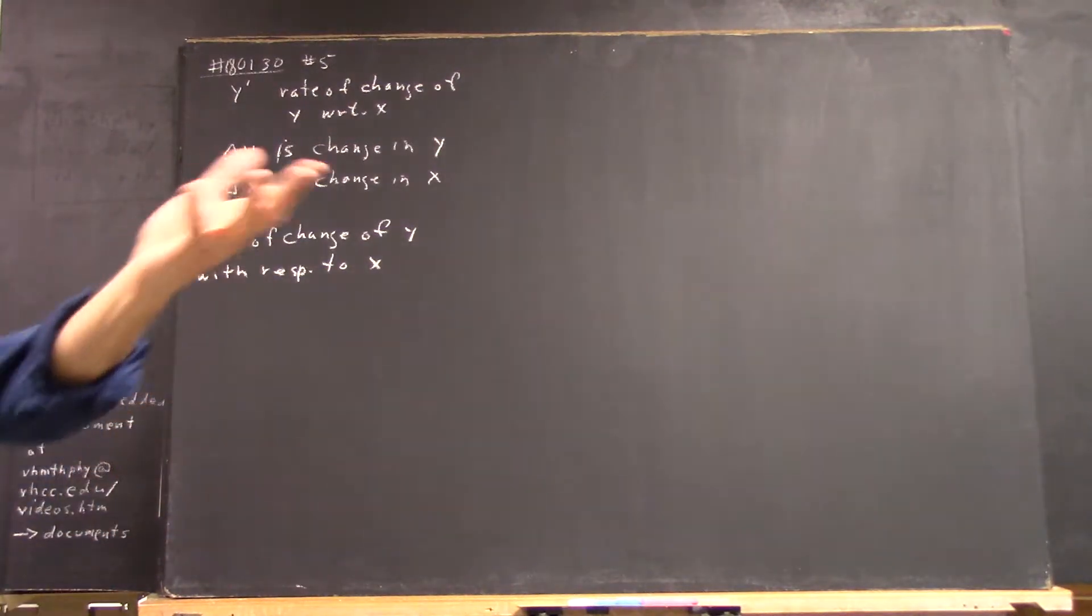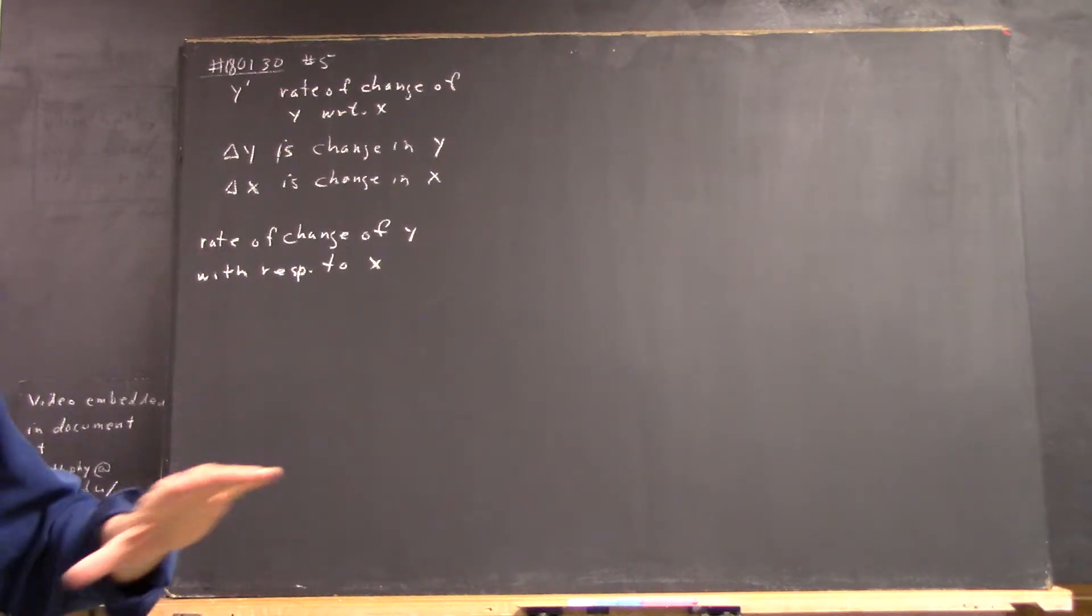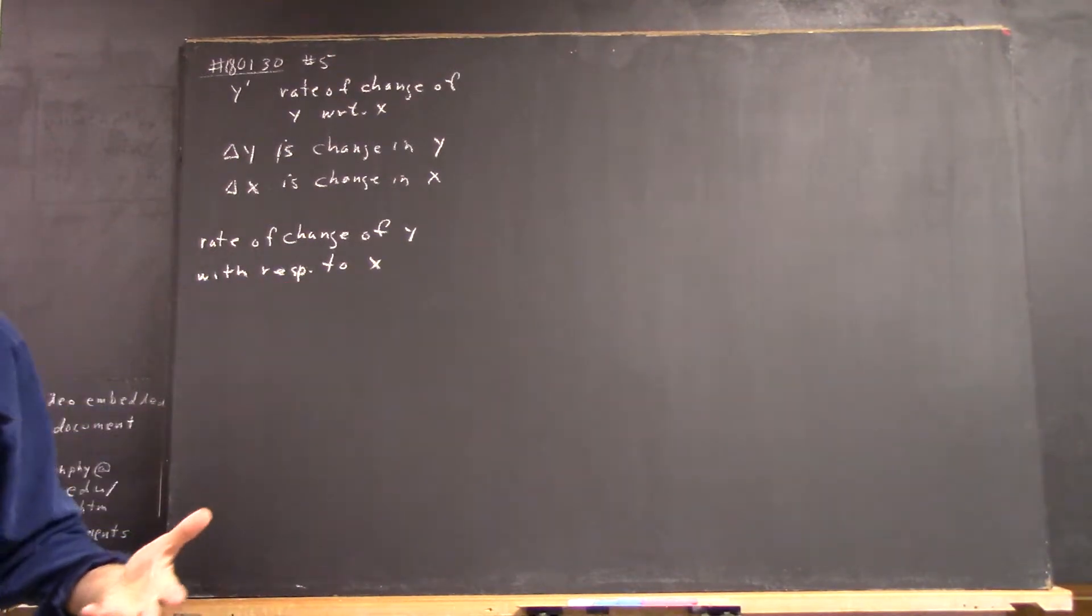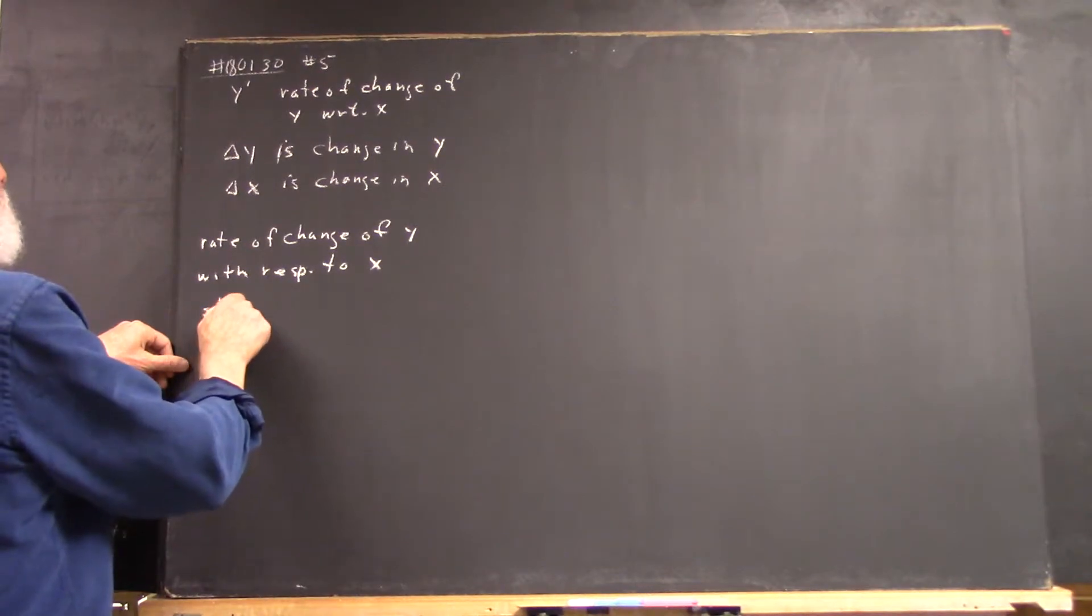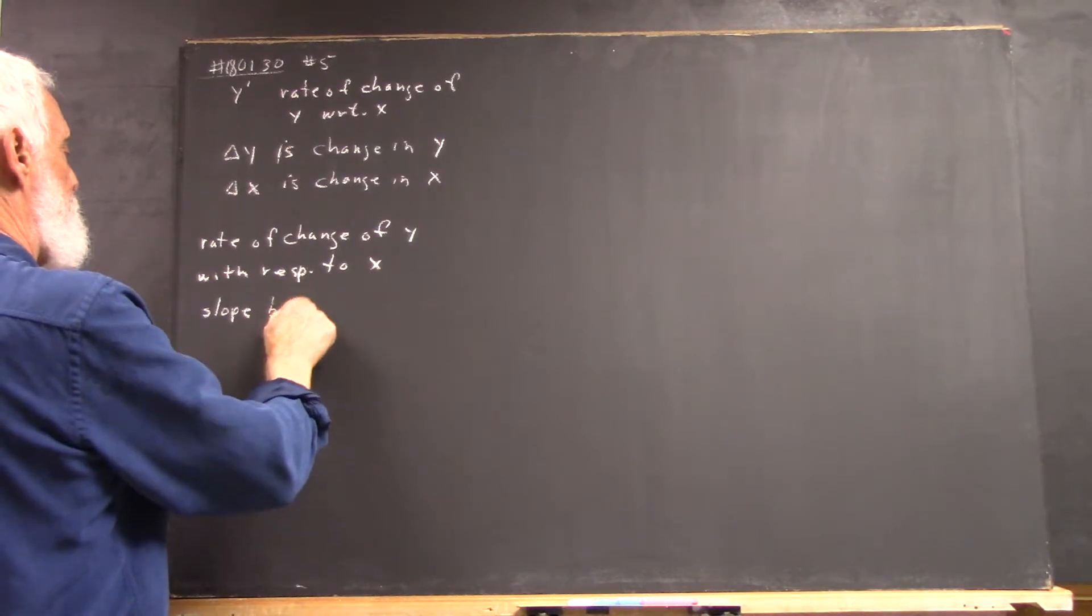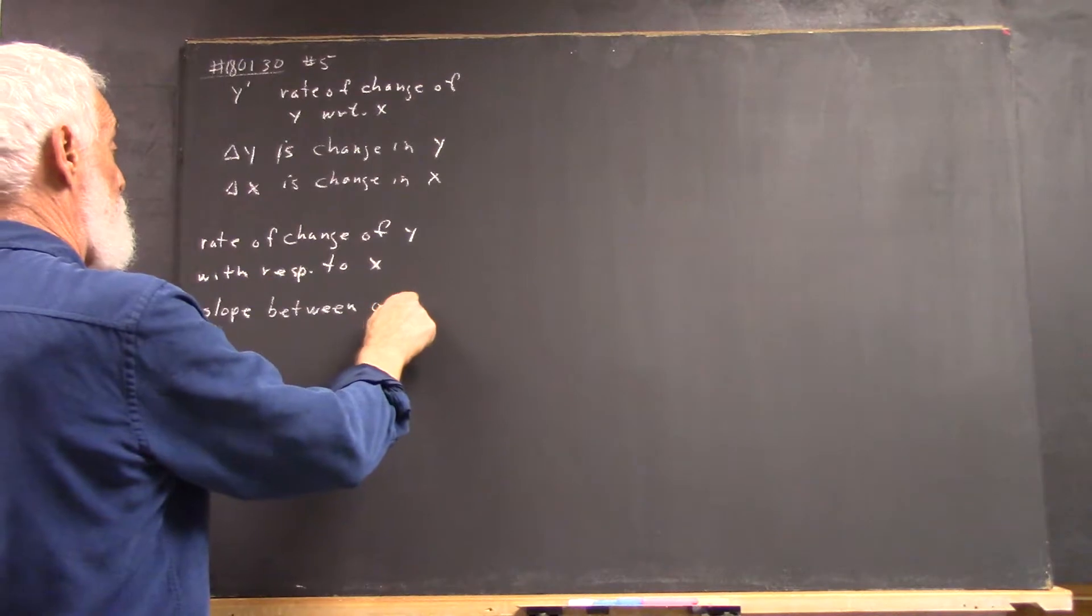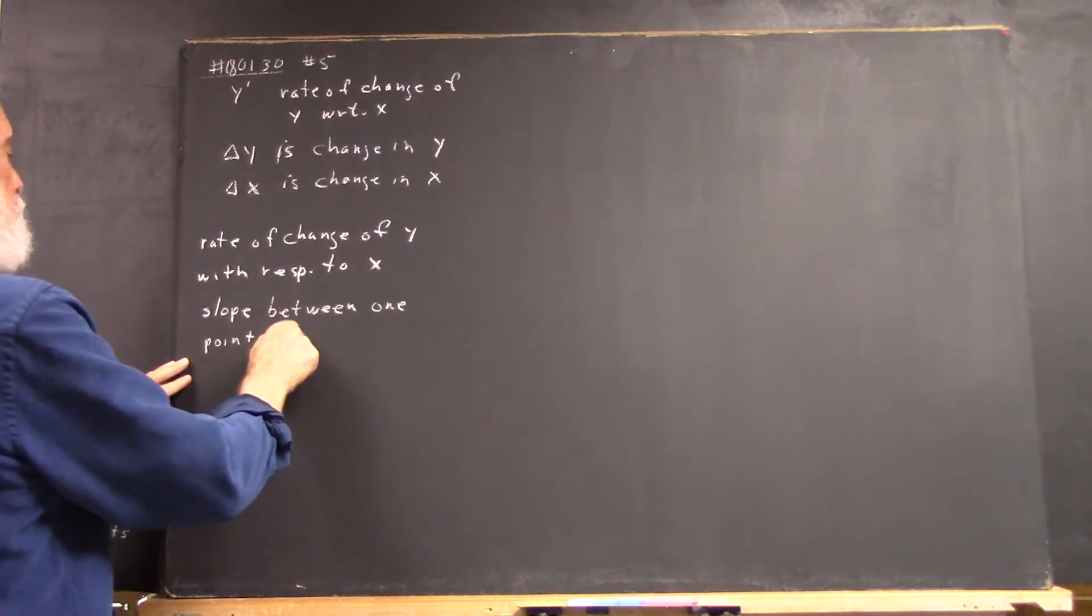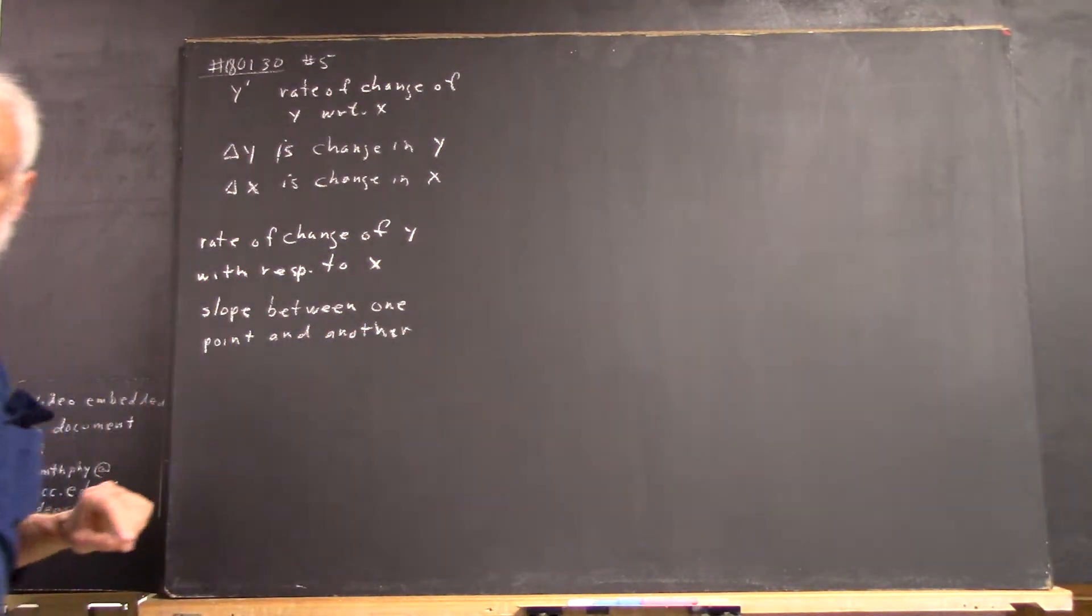The slope. That's an excellent answer. It's correct. Let's talk about the intermediate step because some people want to see that. Rate of change of y with respect to x, how do we define it? The slope. It's the slope. It's the slope between one point and another, right?